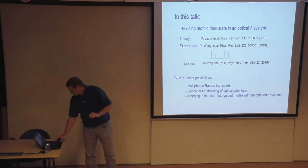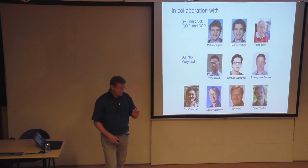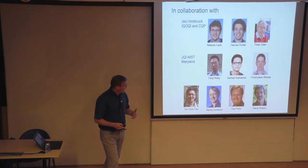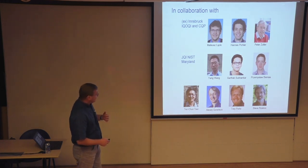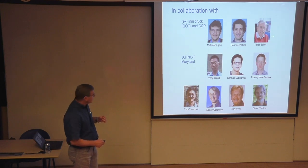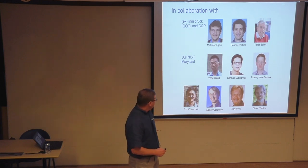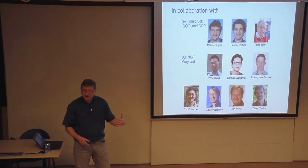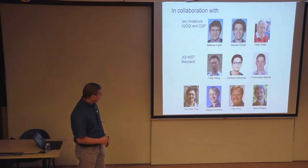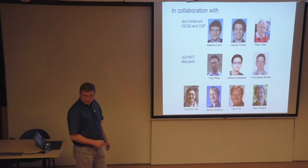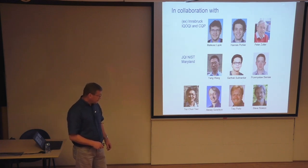Before I start, let me present my collaborators — I don't want to do it at the end, because normally you're in a rush and it's not fair. This is our Innsbruck team: Professor Peter Zoller; Hannah Spiefly, now at Harvard with Michael Lukin; and Mateusz Łącki, who did most of the numerical work and is now in Kraków, Poland. And this is the JQI and NIST theory and experimental team: the theory head is Alexei Gorshkov, and the experimental part is Trey Porter and Steve Ralston.